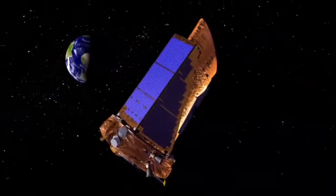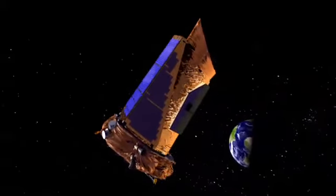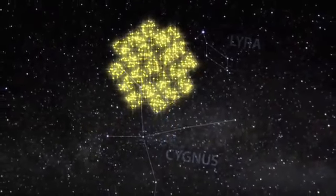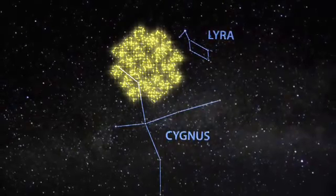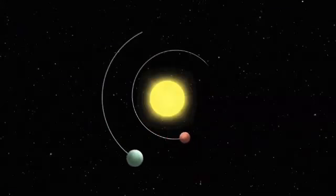NASA's Kepler mission has discovered the first confirmed planetary system with more than one planet transiting the same star. The announcement of the discovery of the two planets, Kepler-9b and 9c.